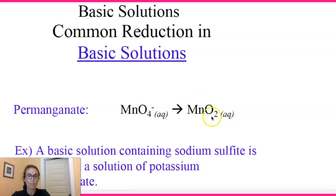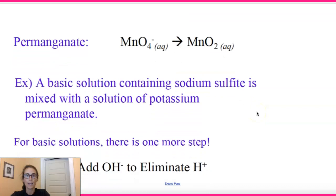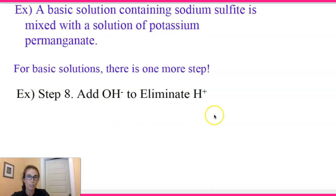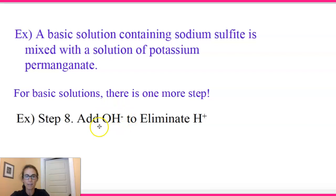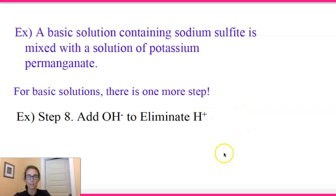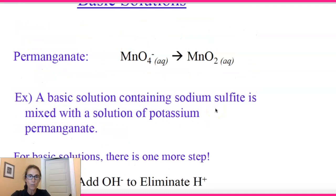So permanganate is getting reduced from plus seven to plus four, and there's only one change and it's sort of what we do at the end. If there are any H⁺ ions remaining in the final equation after you've added both half-equations, you have to add enough OH⁻ to both sides to eliminate H⁺. In a basic solution, you have lots of additional OH⁻ floating around, and that OH⁻ bonds with those H⁺ ions to give you water. So there would not be additional H⁺ floating around in basic solution as there is in acidic solution — you need to think back to the definition of acid versus base to understand why.